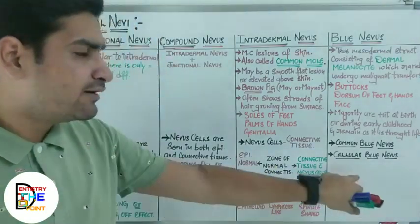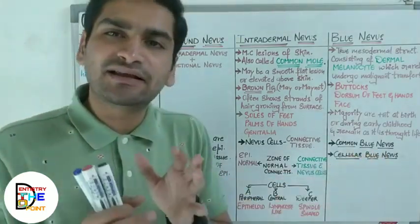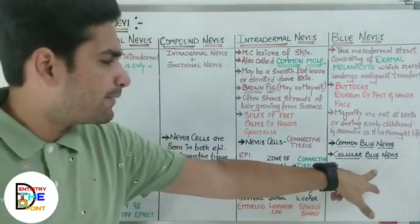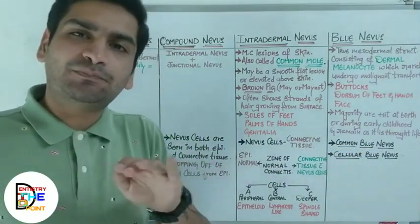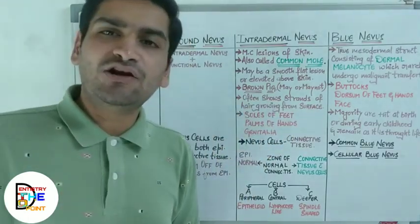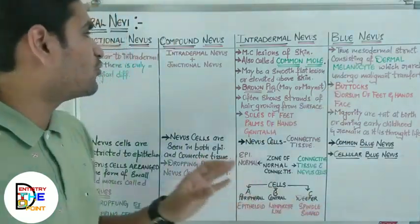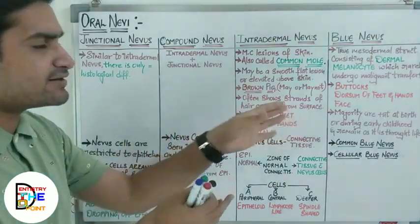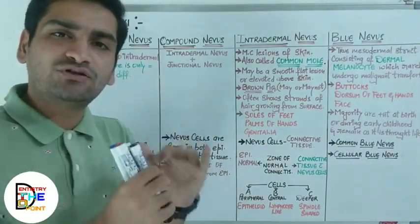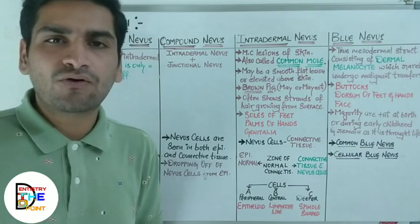There are two variants of blue nevus: common blue nevus and cellular blue nevus. Common blue nevus contains dendritic melanocytes arranged parallel to the epidermis, present in the middle and lower sections of the dermis. Cellular blue nevus additionally contains spindle-shaped cells arranged in an alveolar pattern. I hope you have understood all the variants. Note these down and add a sticky note in your textbook. Next, we will discuss the oral manifestations and treatment of oral nevus.